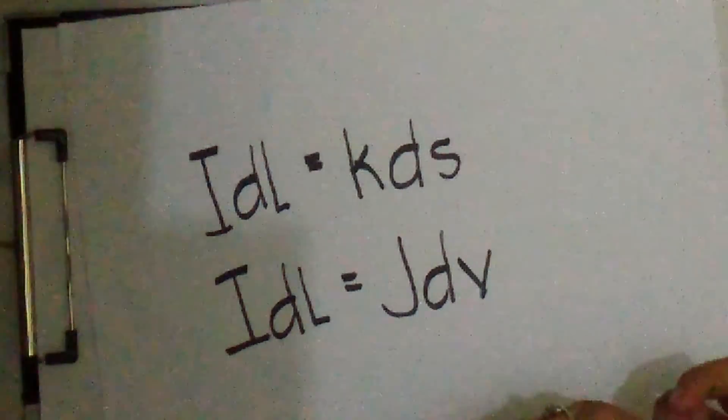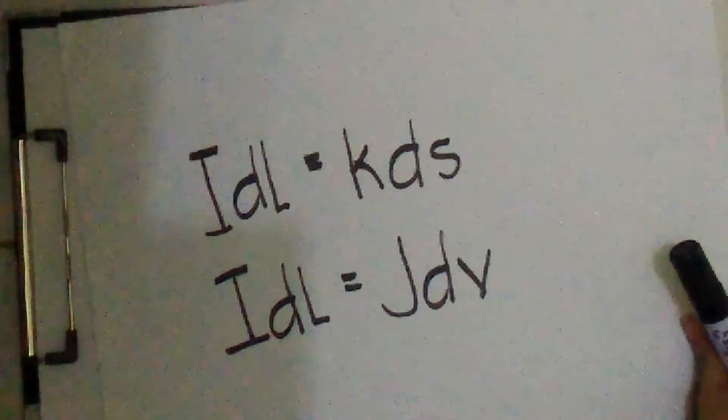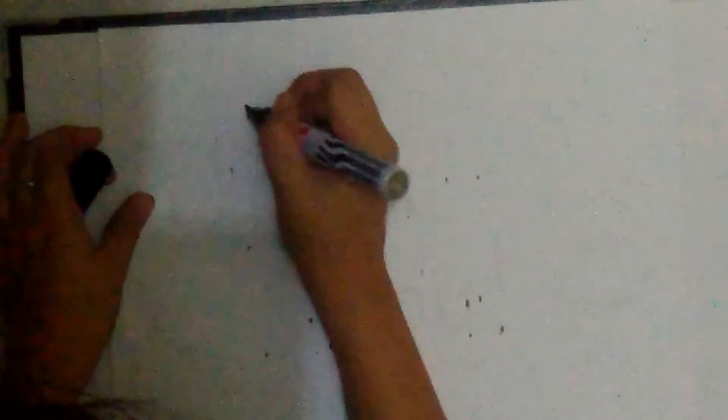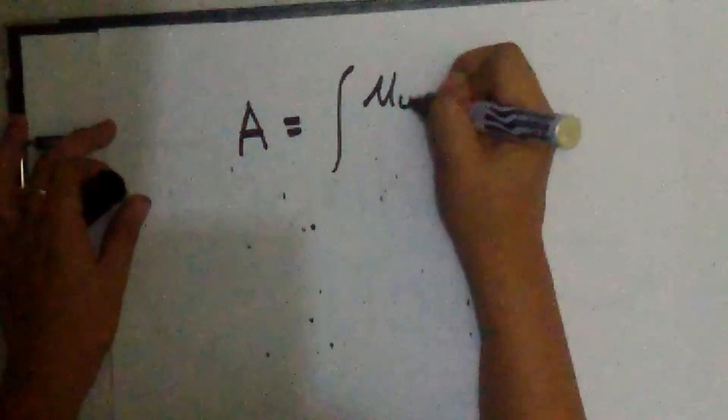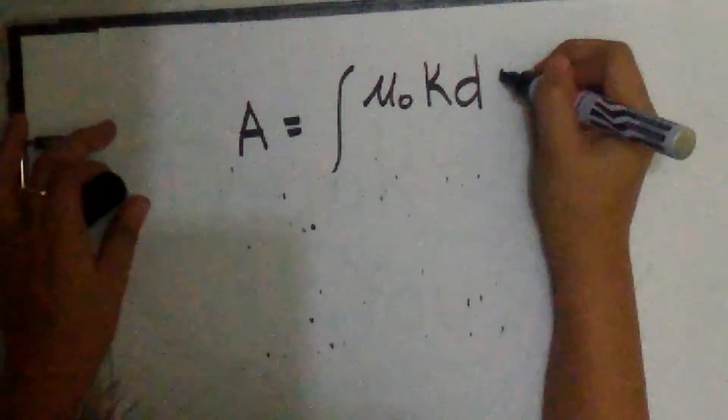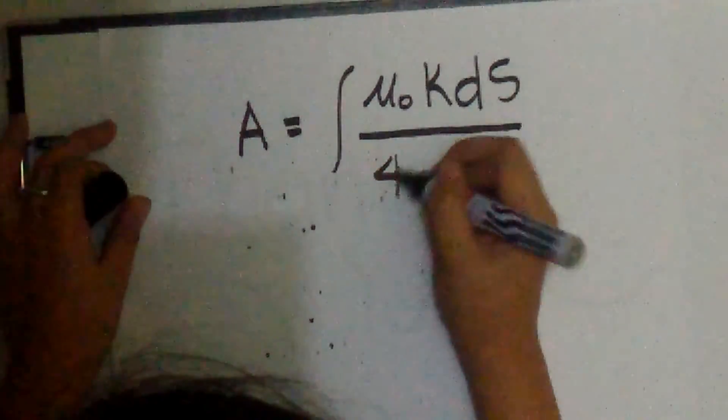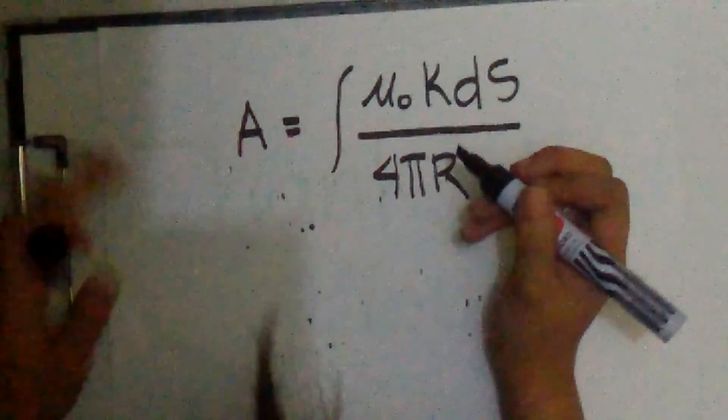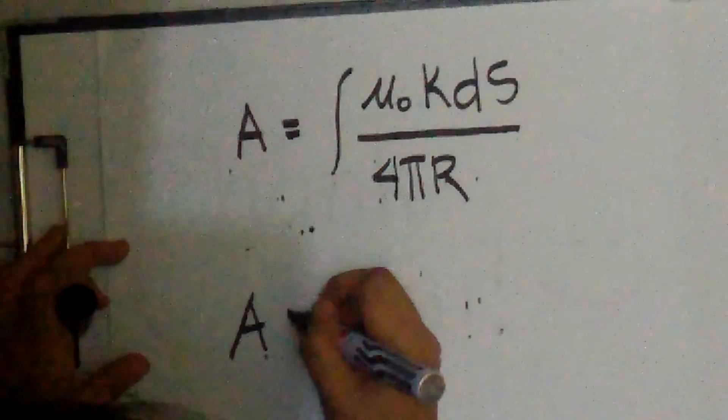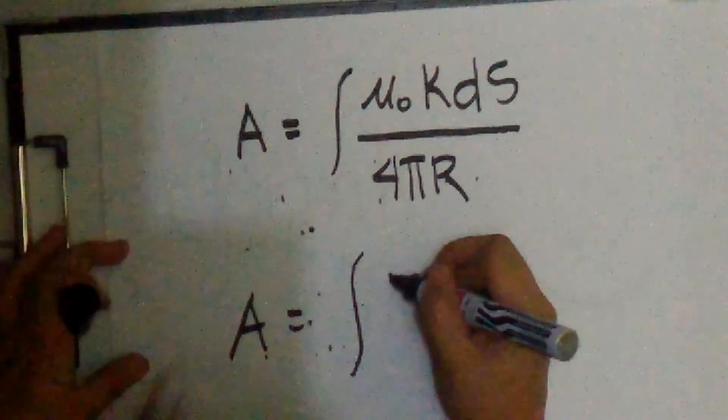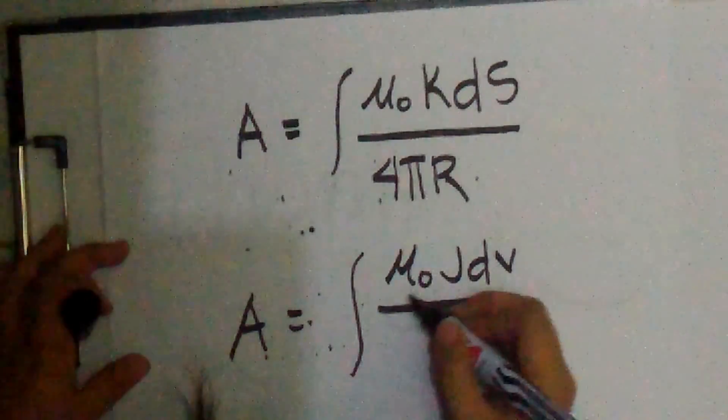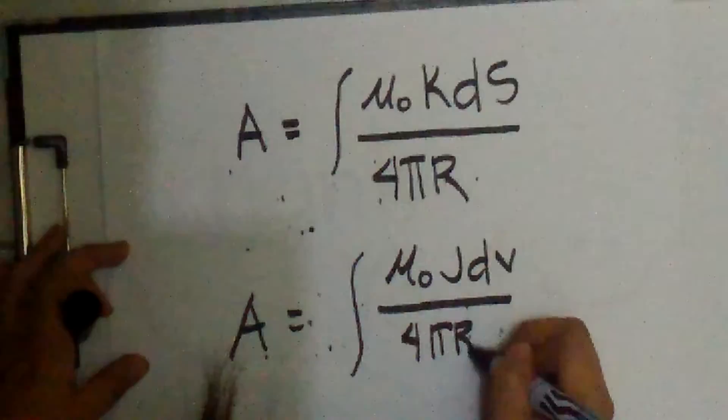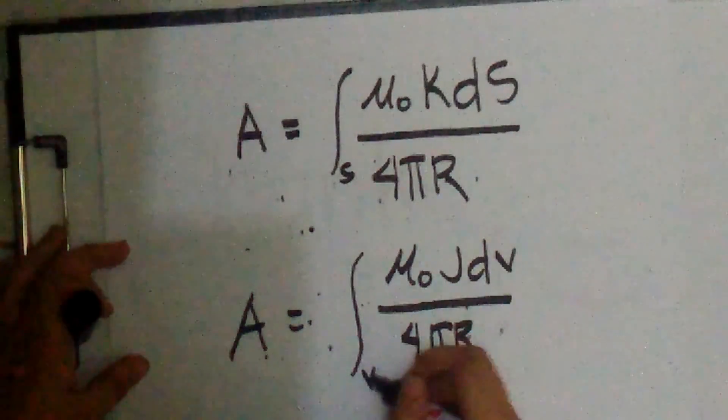In each of these two expressions, the vector character is given to the current. And the alternative expressions for A are then: A is equal to integral permeability of free space K dS over 4π R, and A is also equal to integral permeability of free space J dV over 4π R. This one is limited to the surface and this one is the volume.